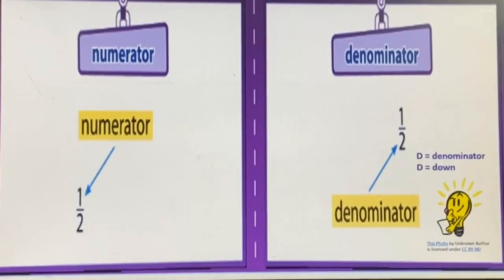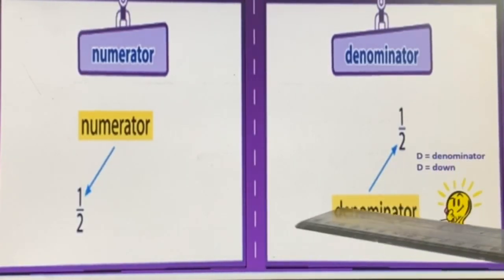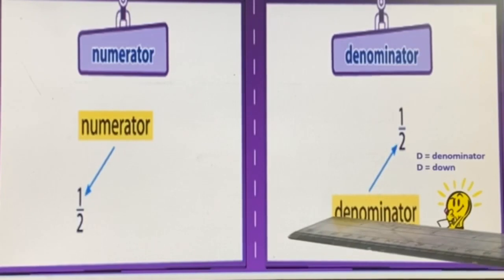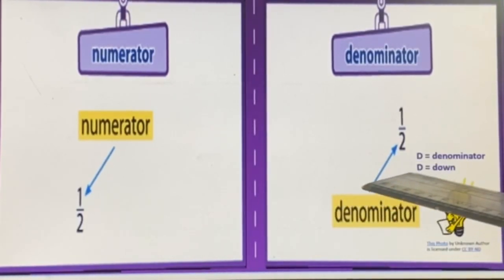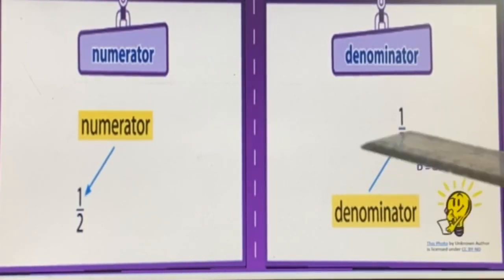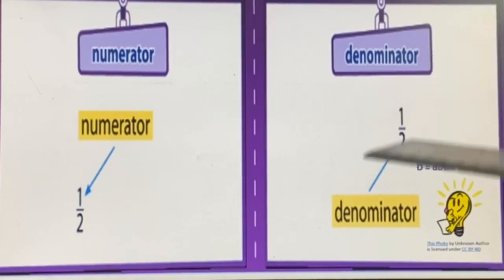You can keep one helpful tip in mind: D for denominator and D for down — the denominator is always written down, below the fraction bar.